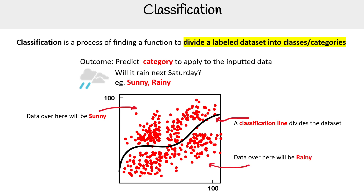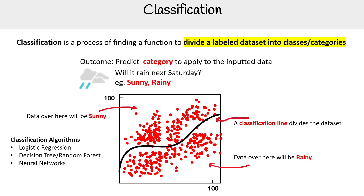If you have a different type of algorithm doing the division, it's going to have different results. You could use logistic regression, a decision tree, random forest, a neural network, Naive Bayes, KNN, or a support vector machine — also known as an SVM.